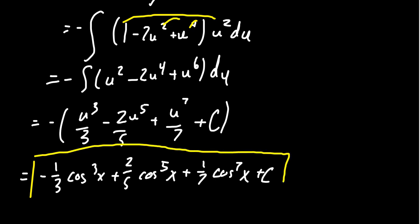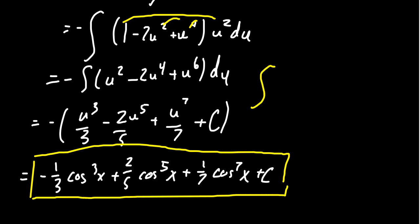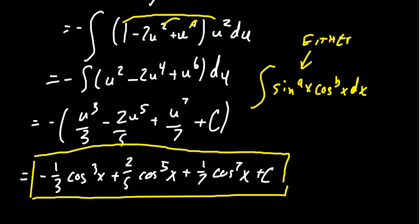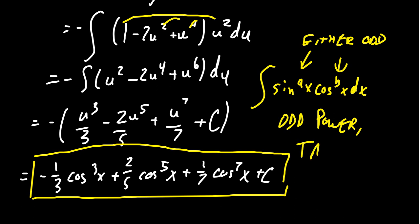To summarize: if we have sine to the a times cosine to the b, and either a or b is odd, this technique is doable. For the odd power, we take one factor aside for the du, and then everything left over we can transition using the Pythagorean identity — converting between sines and cosines as needed — and proceed with u-substitution.